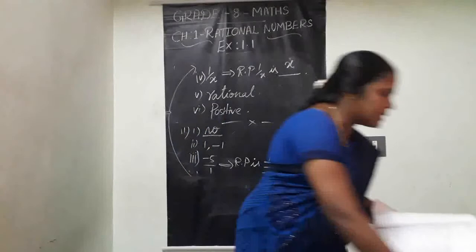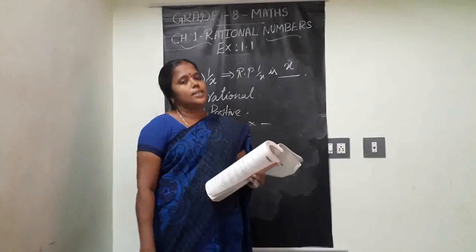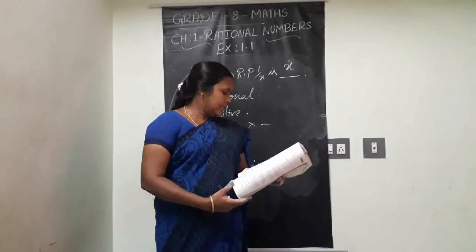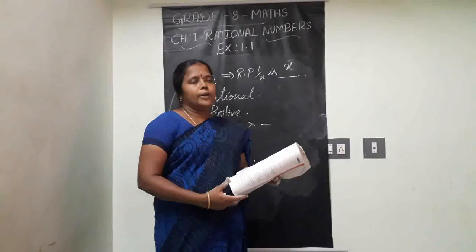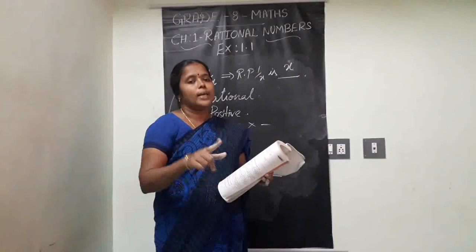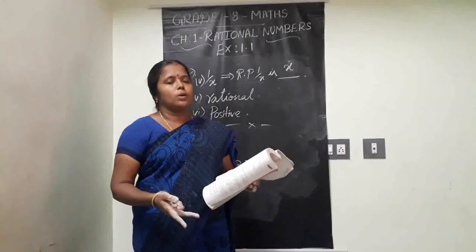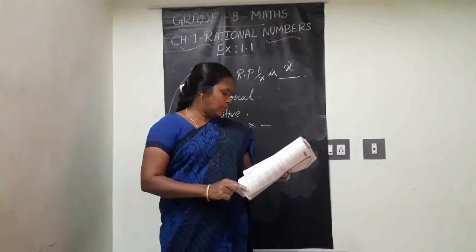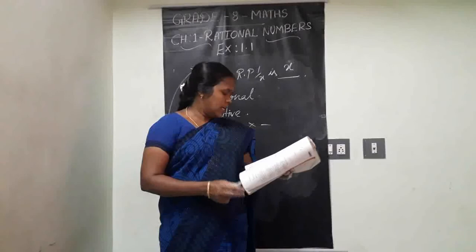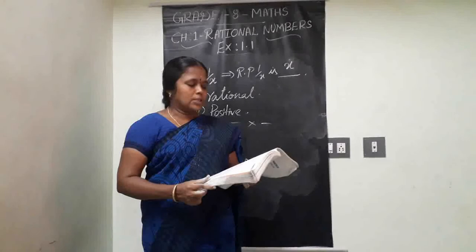So we have completed the first exercise in this chapter. There are 11 sections. The first section was done in the last class; today we covered sections 2 to 11. Sections 2 and 3: additive inverse — add two numbers; answer must be zero. Section 4: multiplicative inverse — multiply both; answer must be 1. Section 5: property names. We solved all questions. Copy neatly in your classwork note. We will see the next exercise in the next class. Thank you.